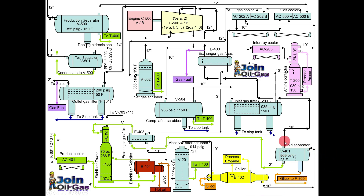The gas separated from the cold separator flows through the gas-to-gas exchanger, because this gas is very cold and we exchange its heat with the incoming gas entering the refrigeration loop. The gas then moves to the compressor section again to increase its pressure for pipeline pumping. It then moves to the outlet gas filter, where the gas is filtered and sent to sales.